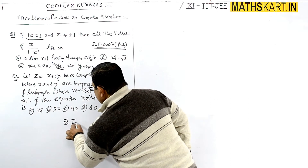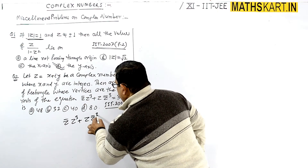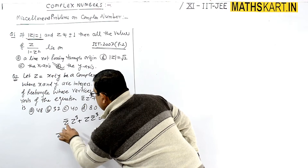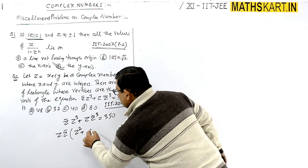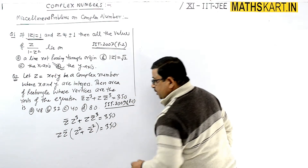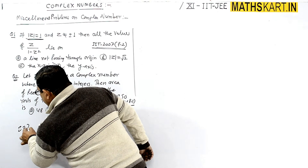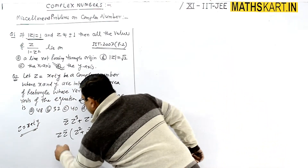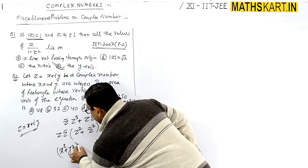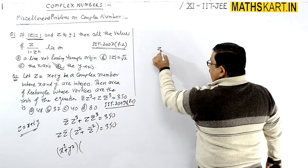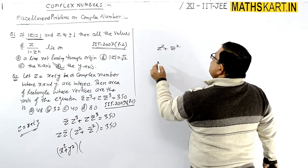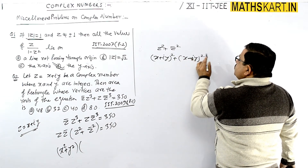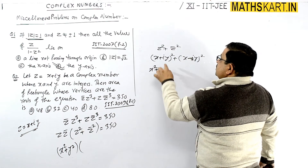The equation is z̄·z³ plus z·z̄³ equals 350. Taking z·z̄ as common, we get z·z̄ times z² plus z̄² equals 350. Now z·z̄ equals modulus of z squared, which equals x²+y². For z squared plus z-conjugate squared: z² is x plus i·y whole squared and z̄² is x minus i·y whole squared.